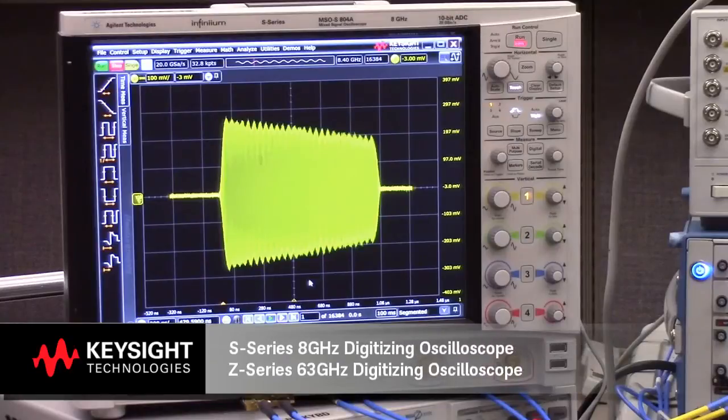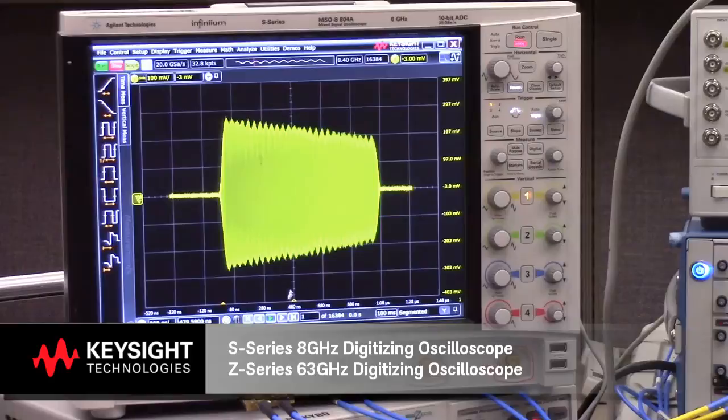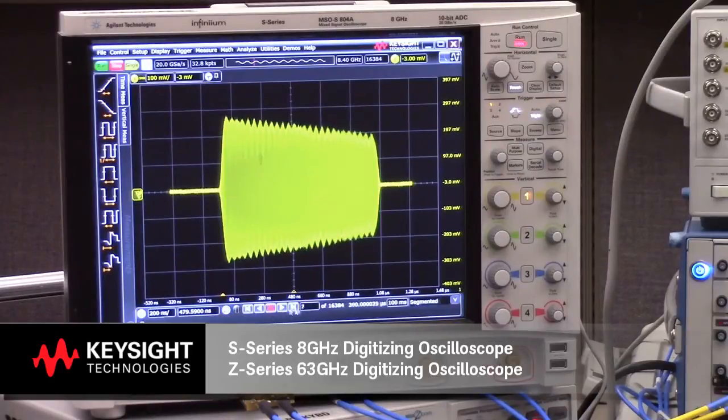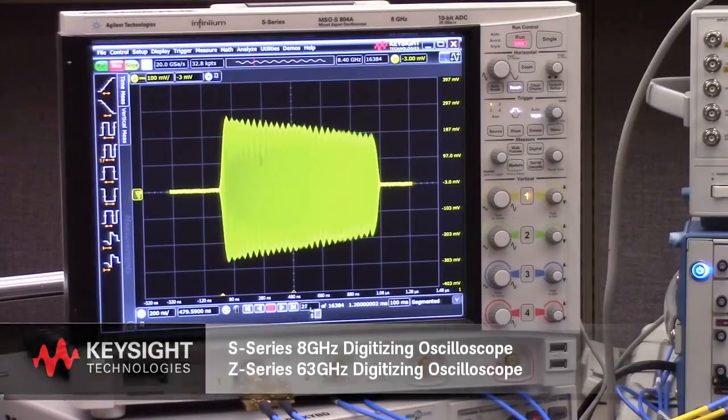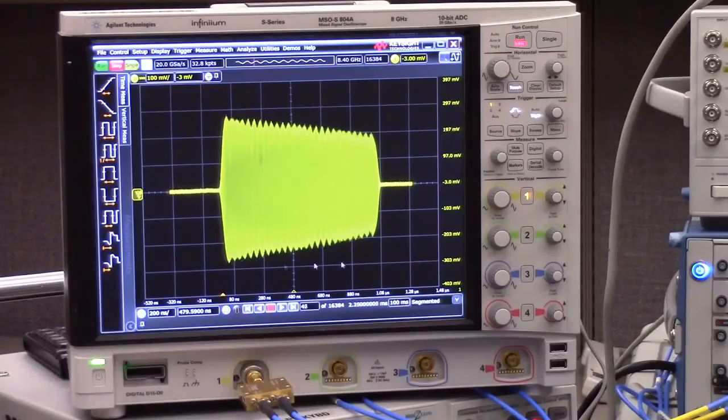We're now looking at the capture of this RF pulse train. We've used segmented memory, so if I press this run button, now the oscilloscope is walking through each one of these segments where a pulse has been captured, and we can now do frequency domain measurements on these segmented captures.